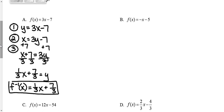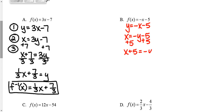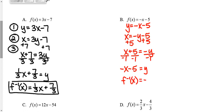On B, I'll go through the same steps without labeling them. Replace f of x with y, then switch x and y. Solving for y: add 5 to both sides, then divide by negative 1. So the inverse is negative x minus 5 equals y. Write the final answer using inverse function notation.